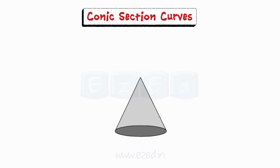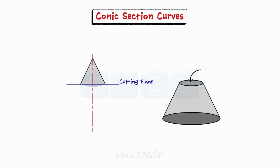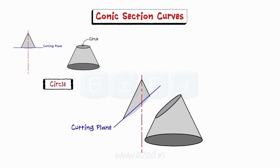When the cutting plane is perpendicular to the axis and cuts all the generators, the section obtained is called a circle. When the cutting plane is inclined to the axis of the cone and cuts all the generators on the side of the apex, the section obtained is called an ellipse.